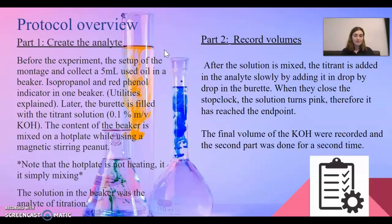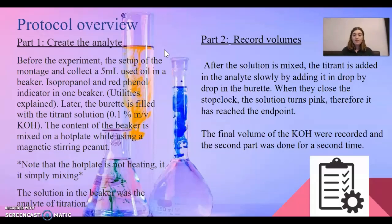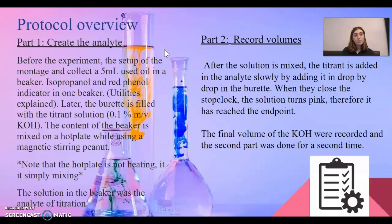Here is the protocol of this lab. First, we're going to set up the entire mechanism and start by collecting five milliliters of used oil into a beaker. Then we're going to add isopropanol and a red phenol indicator inside the beakers, and later add the titration solution using a burette. The whole content of the beaker is then going to be placed onto a hot plate — which is not on, it's important that it's not on — and we're going to place a stir bar inside to allow it to mix together in order to carry out the titration.